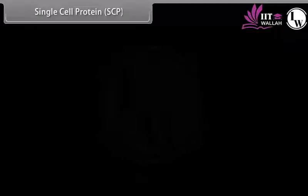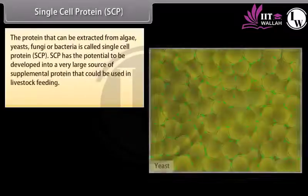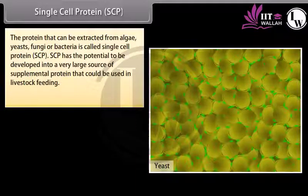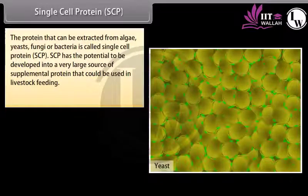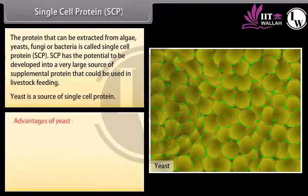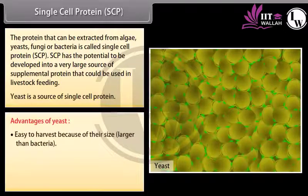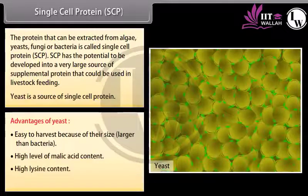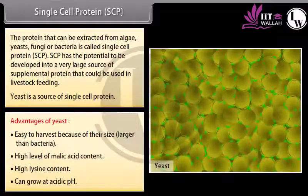Single Cell Protein (SCP): the protein that can be extracted from algae, yeasts, fungi or bacteria is called single cell protein. SCP has the potential to be developed into a very large source of supplemental protein that could be used in livestock feeding. Yeast is a source of single cell protein. Advantages of yeast: easy to harvest because of their size (larger than bacteria), high level of malic acid content, high lysine content, and can grow at acidic pH.